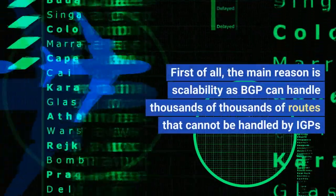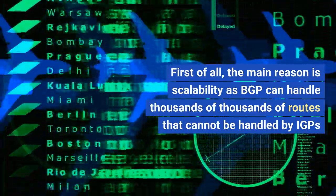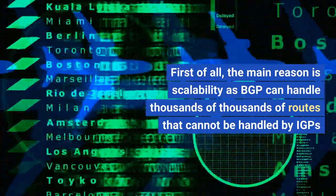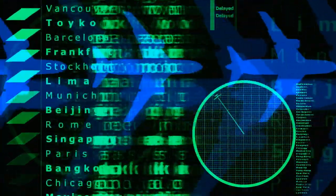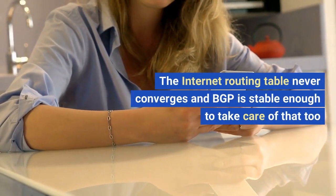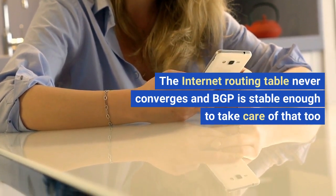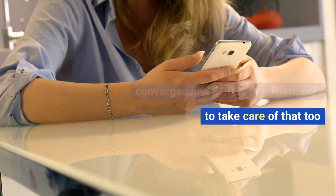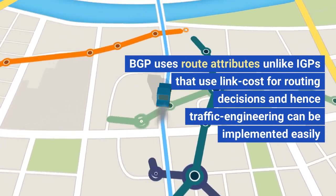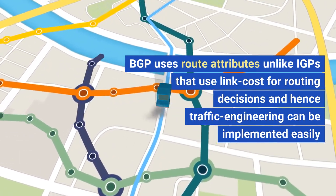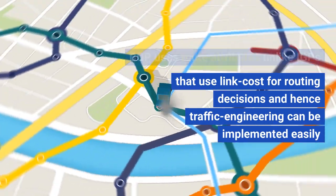The main reason to use BGP is scalability, as BGP can handle thousands of routes that cannot be handled by IGPs. The internet routing table never converges, and BGP is stable enough to handle that. BGP also uses route attributes — unlike IGPs that use link cost — making traffic engineering easier to implement.